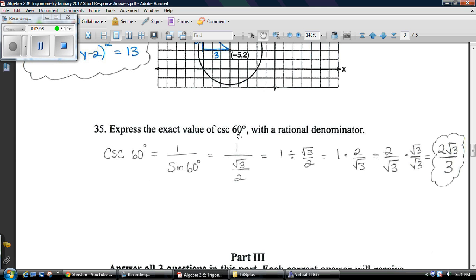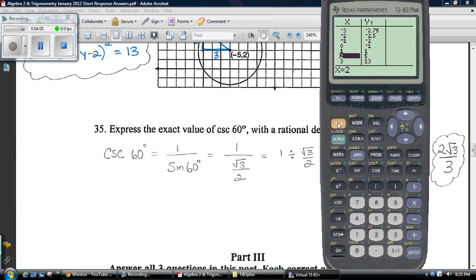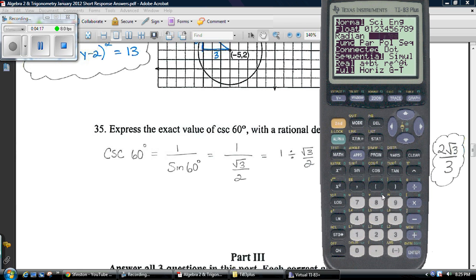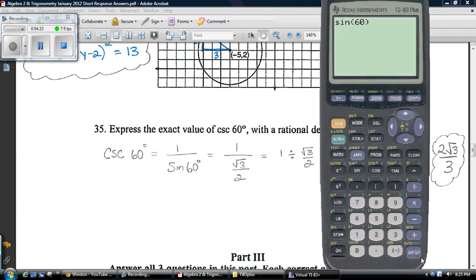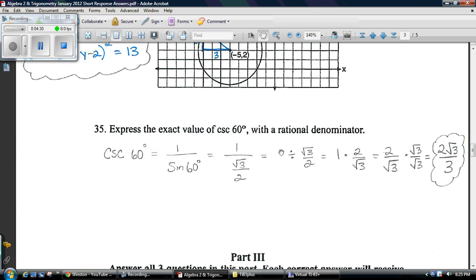Express the exact value of cosecant of 60° with a rational denominator. Well, cosecant of 60 is the same thing as 1 over the sine of 60. Sine 60 is √3 over 2. If you didn't know that, then you should just remember some important things in your calculator, like the fact that if you plug sine 60 in... oops, you know what my problem is, I'm not in degree mode. Got to be in degree mode when you do this. The sine of 60 degrees is 0.866. 0.866 is √3 over 2. You're just going to have to remember that. 1 divided by √3 over 2, right? Keep, change, flip. Rationalize that denominator by multiplying it by itself. There's your answer.